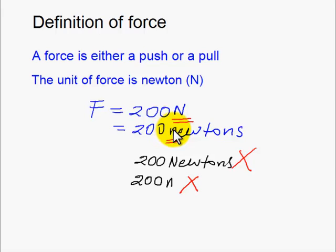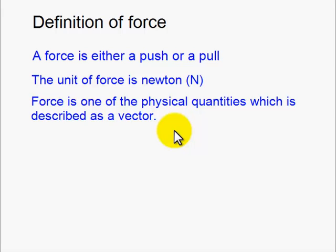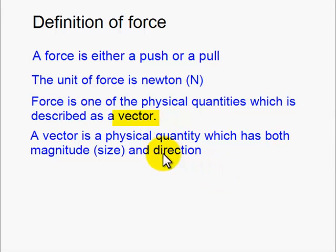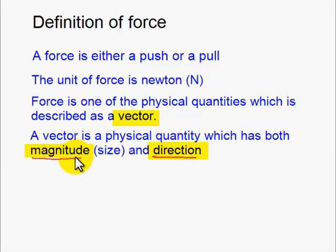The other thing we want to look at is the vector nature of force. Force is one of the physical quantities which is described as a vector. What is a vector? A vector is a physical quantity which has both magnitude and direction. Any physical quantity which is fully described when its magnitude is stated as well as its direction is a vector. Force is an example of a vector, so it pays to remember that force is a vector.